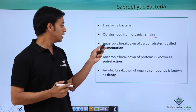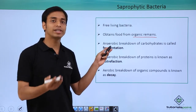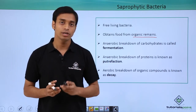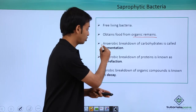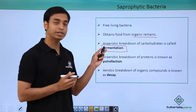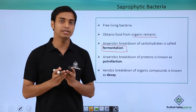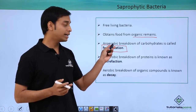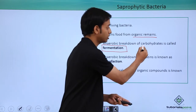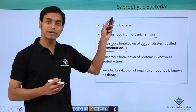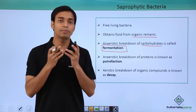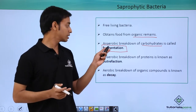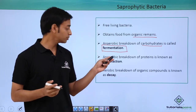There are different types of reactions followed by saprophytic bacteria in order to obtain their food. The first is fermentation. Fermentation is an anaerobic process — that means it does not require oxygen. The anaerobic breakdown of carbohydrates is known as fermentation. When these bacteria break down carbohydrates in the absence of oxygen, this process is known as fermentation.